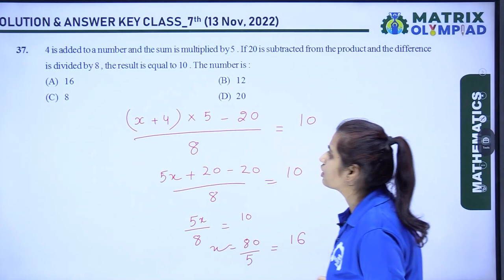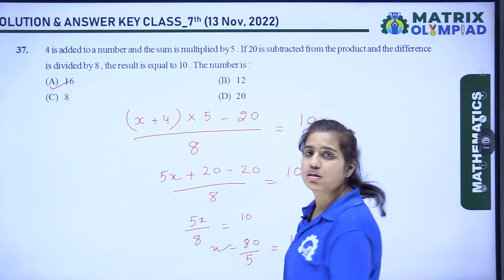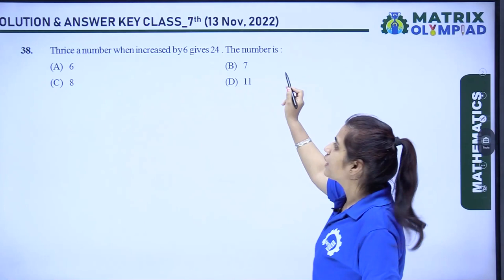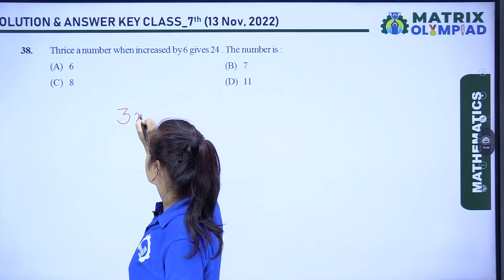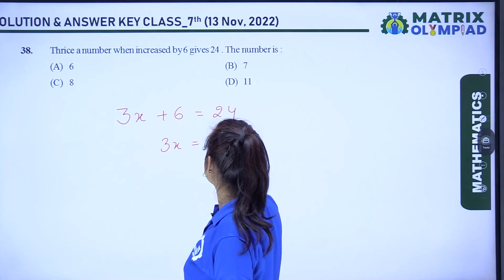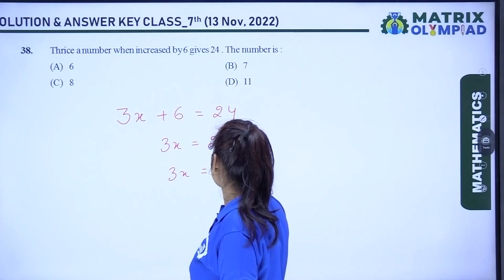Question 38: thrice a number when increased by 6 gives 24. Let the number be x. Equation: 3x + 6 = 24, so 3x = 18, giving x = 6. Option A is the correct answer.